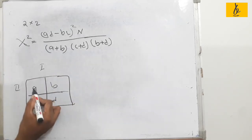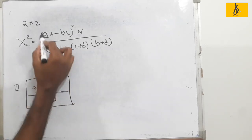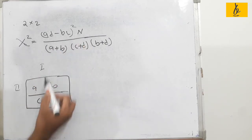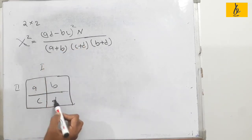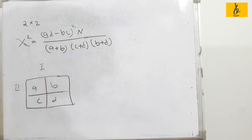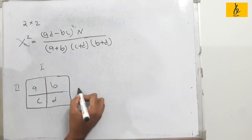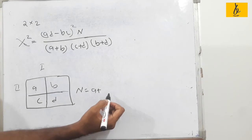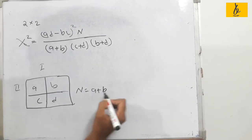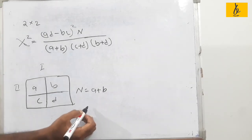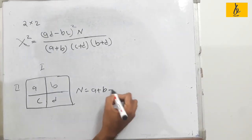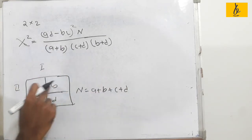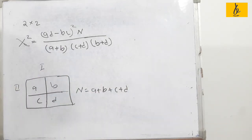The cells in the two-in-two table are labeled A, B, C, and D. The total N is given by A plus B plus C plus D. So the sum of all four cells gives us the grand total N.